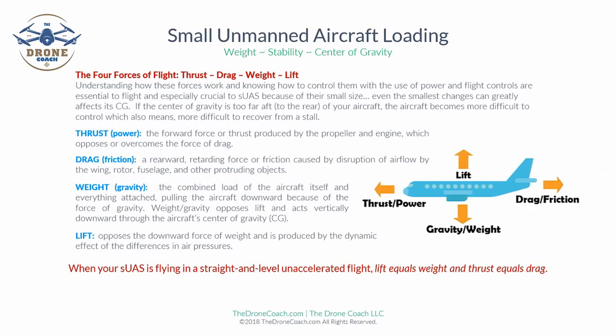The four forces of flight are thrust, drag, weight, and lift. Understanding how these forces work and knowing how to control them with the use of power and flight controls are essential to flight — and especially crucial to an SUAS because of their small size, as even the smallest changes can greatly affect its center of gravity. If the CG is too far aft or to the rear of your aircraft, the aircraft becomes more difficult to control, which also means more difficult to recover from a stall. Thrust, or power, is the forward force produced by the propeller and engine, which opposes or overcomes the force of drag.